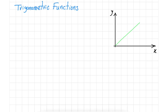Consider a 2D Cartesian coordinate system. I draw a green line from the origin. Consider an arbitrary point on this green line, like here, which has coordinates X and Y.